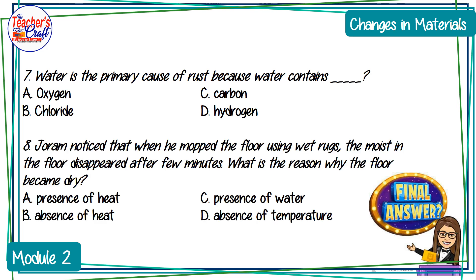Number eight: Joram noticed that when he mopped the floor using wet rugs, the moisture in the floor disappeared after a few minutes. What is the reason why the floor became dry? A — presence of heat; B — absence of heat; C — presence of water; or D — absence of temperature.